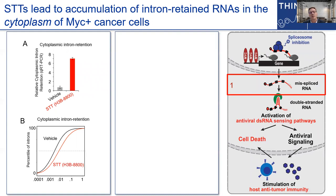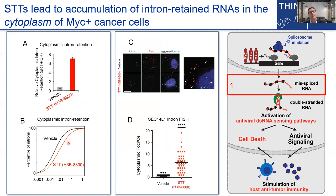This model suggests that splicing perturbation leads to accumulation of mispliced RNA in the cytoplasm, since this is specifically where most double-stranded RNA sensors of the antiviral system reside. Much like what the Abdel-Wahab lab observed in other tumor types, here we see in TNBC cells by both qPCR and RNA-seq cytoplasmic accumulation of intron-retained RNA really across the transcriptome, confirmed by single-molecule approaches like RNA-FISH shown here.